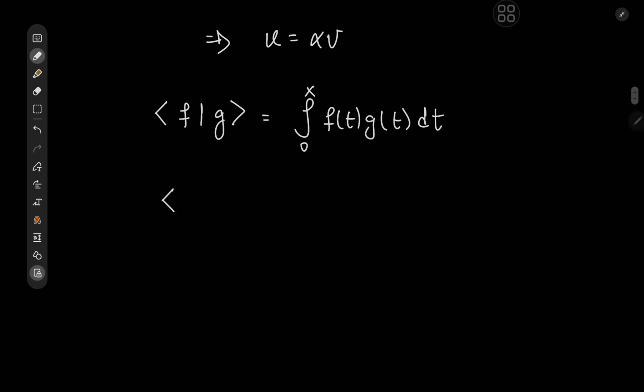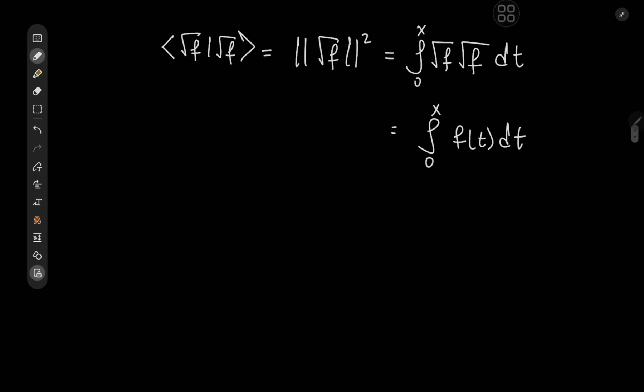This actually works quite nicely because we can define the terms in our integral equation using this inner product. Let's say we take the inner product of square root f with itself. In other words, we have the squared norm of root f, which is the integral from 0 to x of root f times root f dt, which yields the integral from 0 to x of f(t) dt. By the same token, we can define the squared norm of 1 over root f as the integral from 0 to x of 1 over f(t) dt.